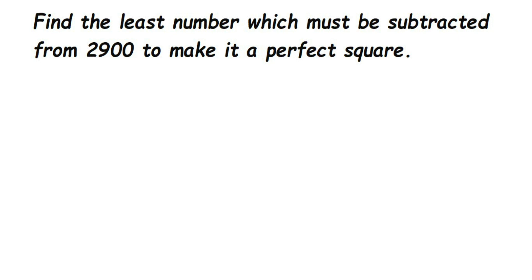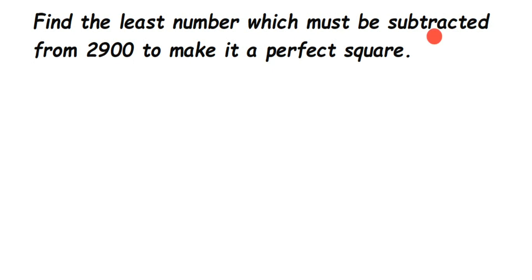This is a question from squares and square roots, received from the comments. The question is: find the least number which must be subtracted from 2900 to make it a perfect square. Since 2900 is not a perfect square, we need to find the number to subtract. For questions like this — finding least number to be subtracted or added — we have to use the division method, which is used to find the square root.